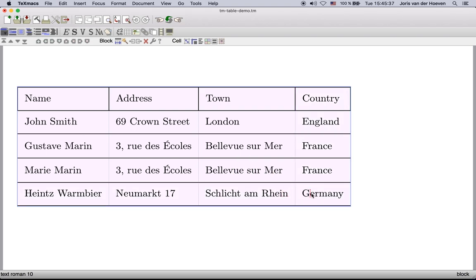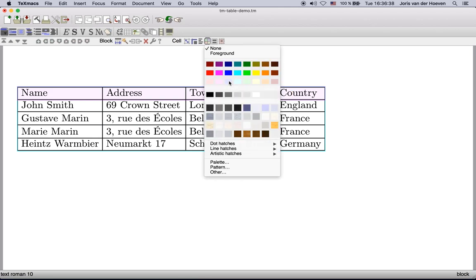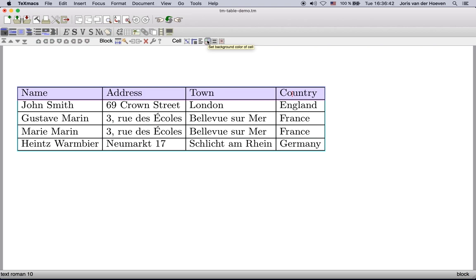You may use command or meta backspace to restore the default properties. The background color of cells can be changed using the following submenu. You may also use background patterns.